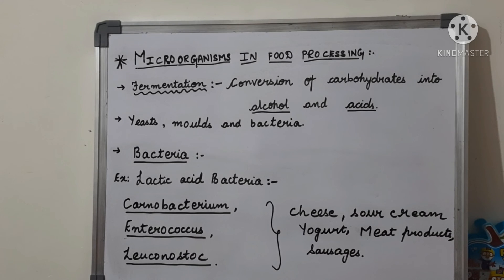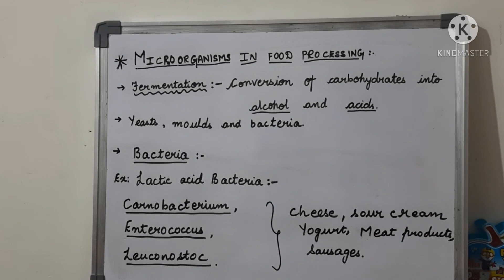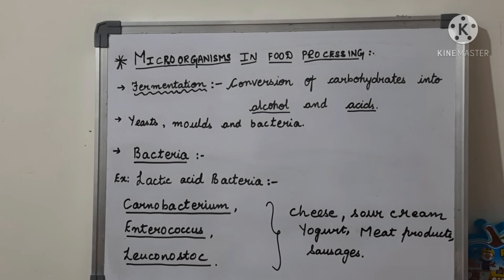Mostly lactic acid bacteria are used in food processing. Examples include Carnobacterium, Enterococcus, and Leuconostoc, which have been used in the production of cheese, sour cream, yogurt, meat products, and sausages. These are the few examples of yeasts, moulds, and bacteria used in the food processing industry.